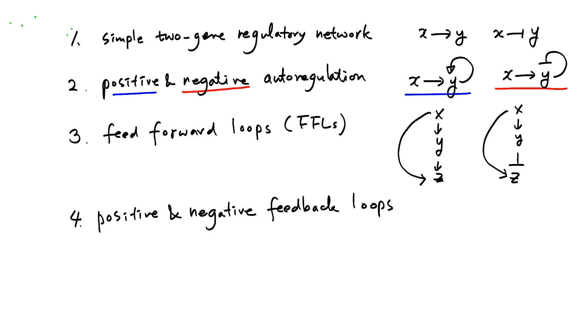Next are positive and negative feedback loops. For positive feedback loops, we have mutual activation: X activates Y, and Y activates X.